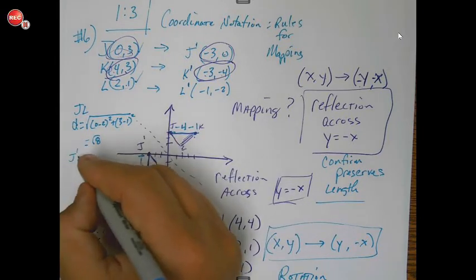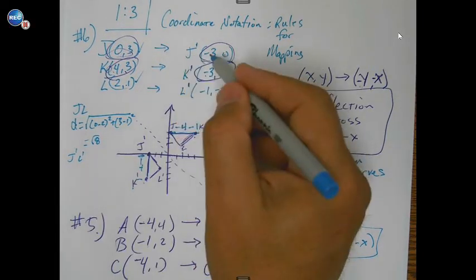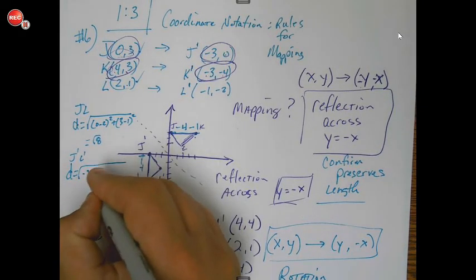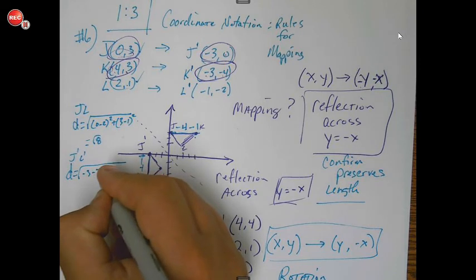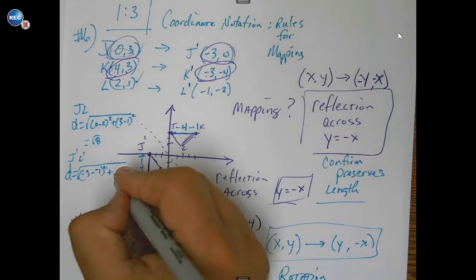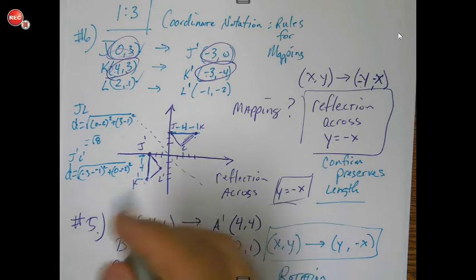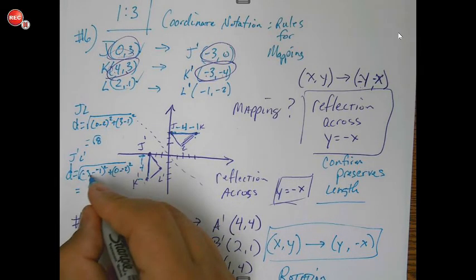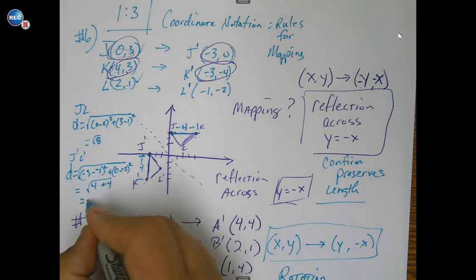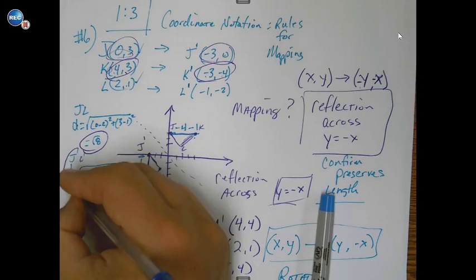Let's see if J prime L prime works. So now I'm going to go from negative three to negative one. Negative three minus a negative one. And then I'm going to go from zero to negative two, zero minus a negative two. Hopefully you guys can see that. Okay. Negative three minus a negative one is negative two squared, which is four. Four plus four. That's the square root of eight again.